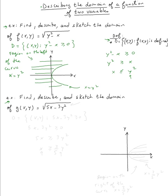Let's do the next example: find, describe, and sketch the domain of g(x,y) = √(5x - 3y²). The domain will be the set of all (x, y) such that that radical exists as a real number, meaning whatever is under the radical must be greater than or equal to zero. So the domain requires 5x - 3y² ≥ 0.